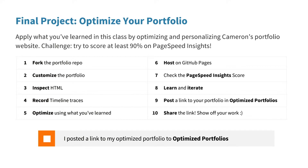Once you finish your optimizations, run your new and improved portfolio through PageSpeed Insights. You'll see suggestions that should make sense now, like optimize CSS delivery and remove render-blocking JavaScript. When you think you've done all the optimization you can, post what changes you made on the forums along with the URL of your portfolio and the new PageSpeed Insights score. And why not make the portfolio page your own — you can use it to showcase the projects you're proud of. Good luck!